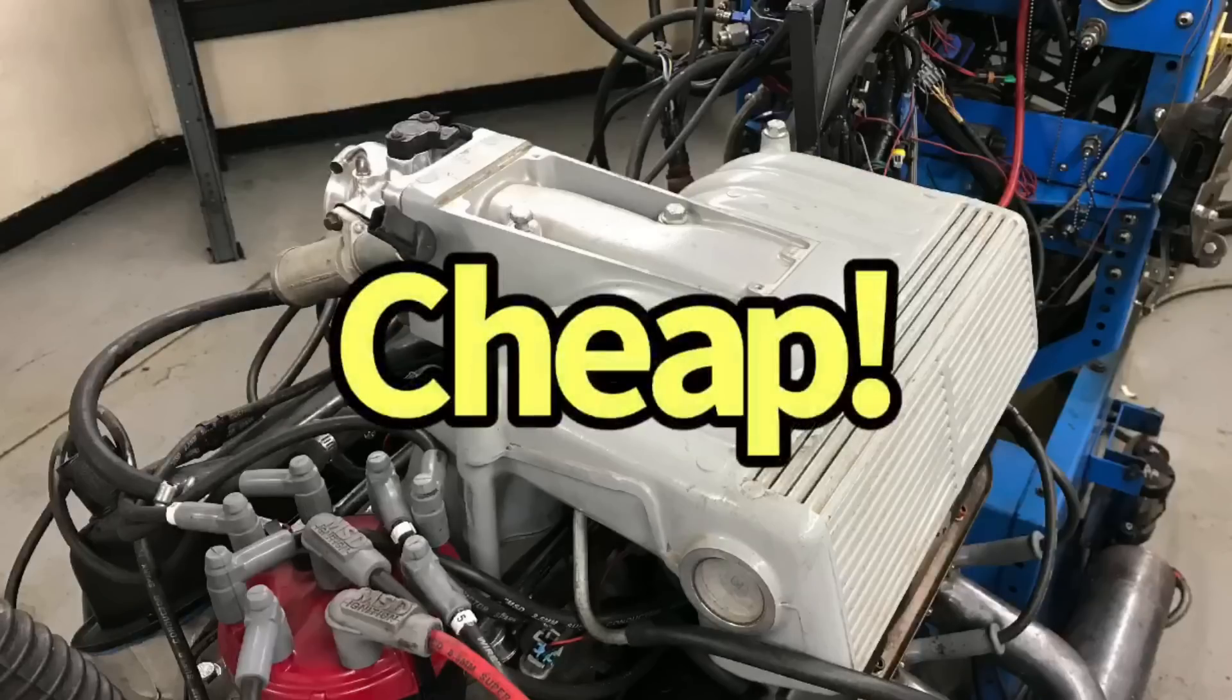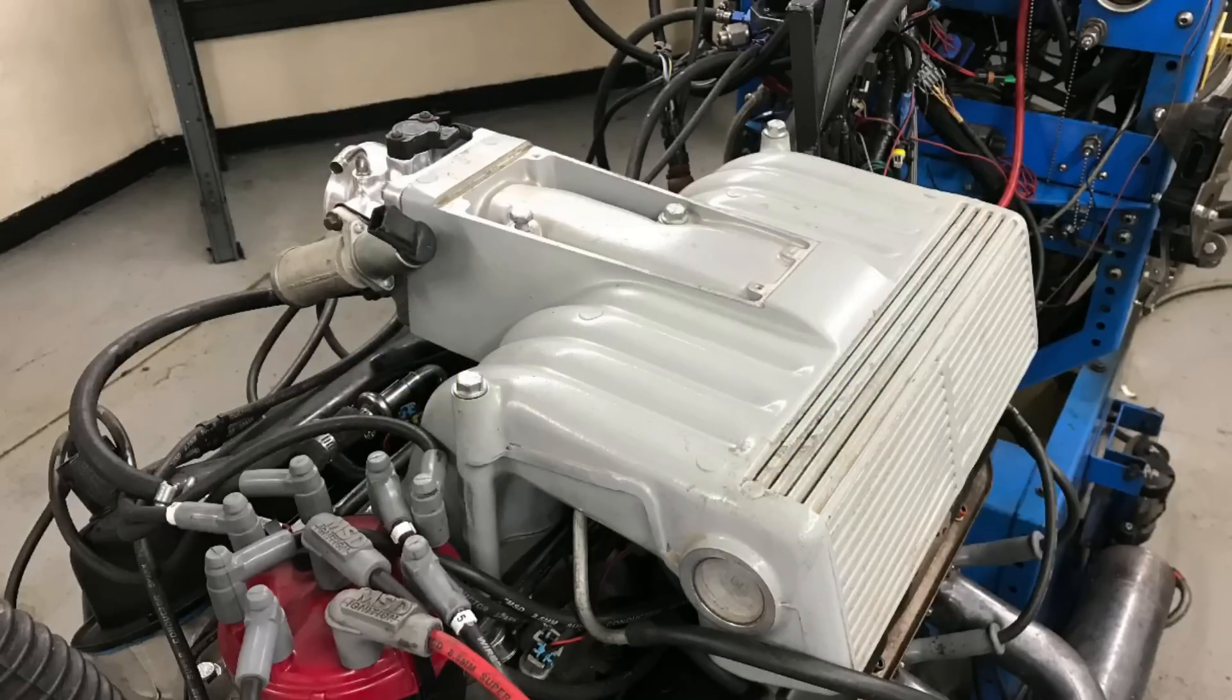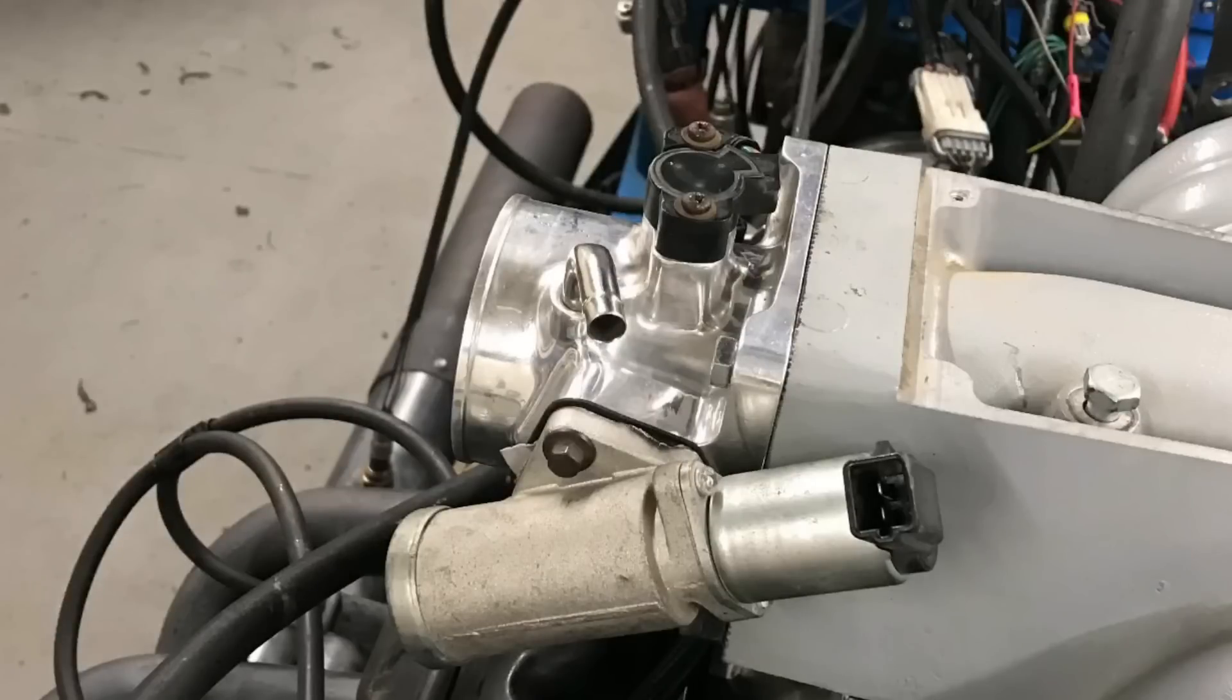The one other thing that I want to mention here is obviously availability. A tubular GT40 anymore is kind of an expensive deal. Guys want lots of money for them, so you'll probably end up paying more for those than you will for some of these other versions. That's especially the case of the Explorer version, which unfortunately made the least amount of power. It did much better, obviously, when we installed the throttle body right onto the intake manifold without the elbow.